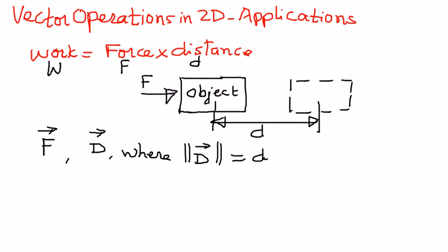Therefore, in terms of vectors, work can be defined as w is equal to vector f dot vector d. It is a dot product between the force vector and the distance vector.